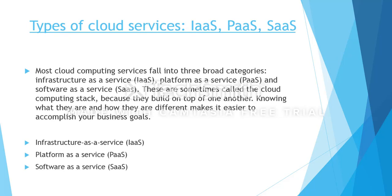Now we will look at types of cloud services. They are divided into three major categories: Infrastructure as a Service (IaaS), Platform as a Service (PaaS), and Software as a Service (SaaS). Most cloud computing services fall into these three broad categories — sometimes called the cloud computing stack because they build on top of one another. Knowing what they are and how they differ makes it easier to accomplish your business goals.